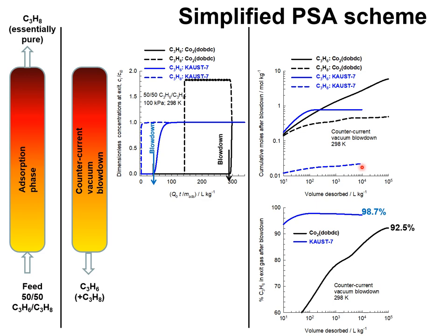These differences in the amounts of propane in the product are reflected in the purities. With KAUST-7, a purity of 98.7% is achievable in the simple PSA scheme of adsorption and desorption, whereas with Cobalt MOF-74, the maximum achievable purity is only 92.5%. With a simplified PSA scheme, neither of these two MOFs is capable of producing polymer-grade propylene, but with Cobalt MOF-74 the maximum achievable purity is significantly lower than with KAUST-7.